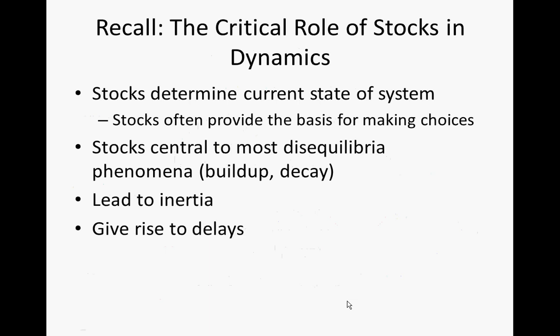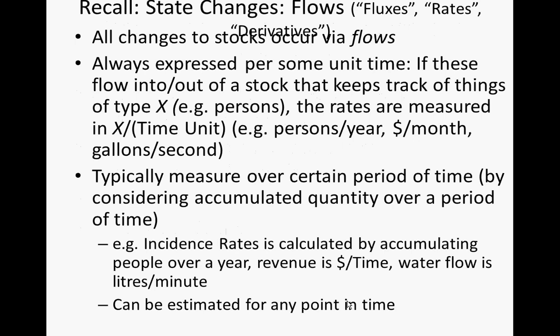Stocks determine the current state of the system. They're central to most equilibrium analyses and they lead to inertia — they take time to change. Flows represent the element of the process of changing the stocks. They represent rates of change. Different flows into a stock might represent rates associated with different types of processes.